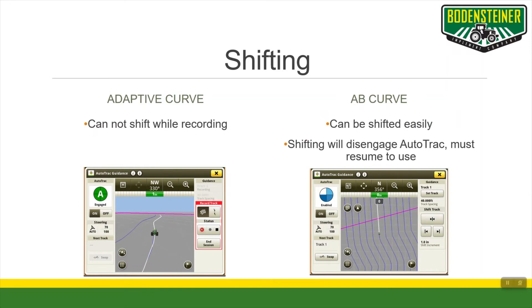There are some differences in shifting as well. With adaptive curve, you cannot shift while you're in a recording session. Although it will let you when you're done recording, it's really not recommended because the shift feature does not work how it typically does in an AB curve or a straight track. When you hit the shift button while on an AB curve, your auto-track will be disengaged — it needs to do this in order to process the line and change it over. You'll have to hit the resume button once it's done calculating the curves.